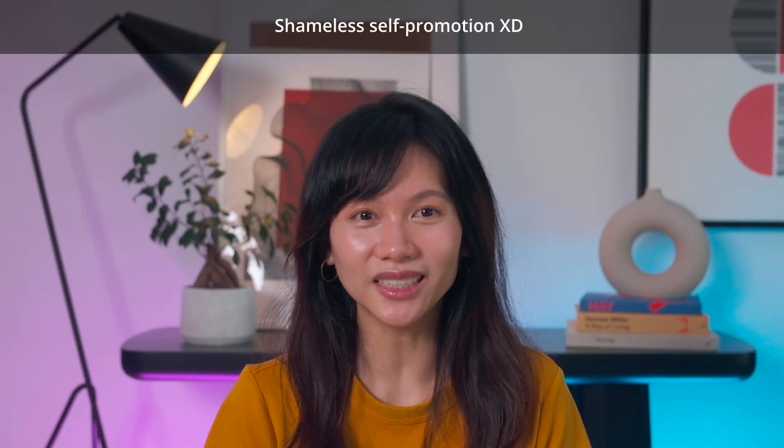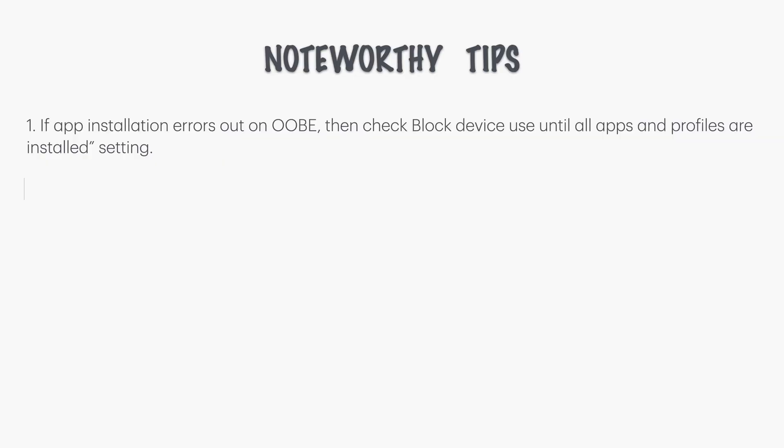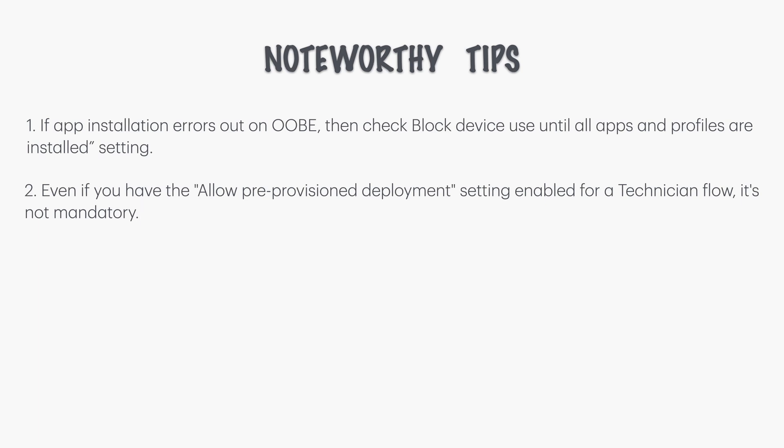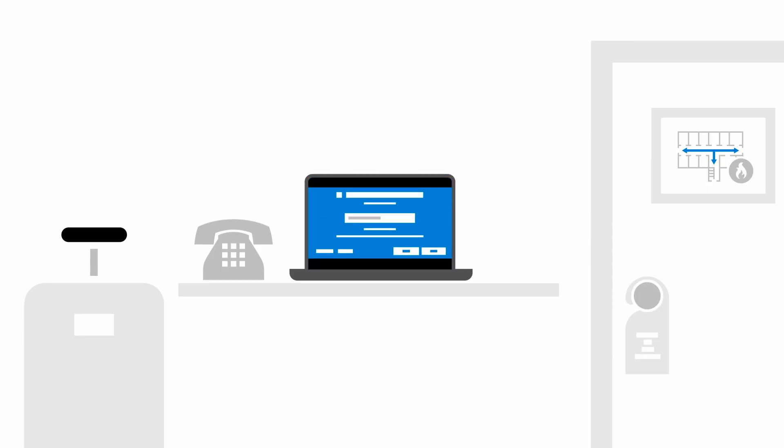Of course, if you're interested in my consultation on how to help you set this up for your organization, please feel free to contact me and we can discuss further. Next, I'm going to share some noteworthy tips. Tip one: if you encounter an app installation error on the OOBE and it doesn't allow you to move forward, your setup probably has 'block device use until all apps and profiles are installed' enabled under the Enrollment Status Page. To fix this, you can either set this to no, or fix the apps with the issue. Tip two: even if you have the allow pre-provision deployment setting enabled for a technician flow, it's not mandatory — the user will not have any problem turning on the computer and running through the setup themselves.